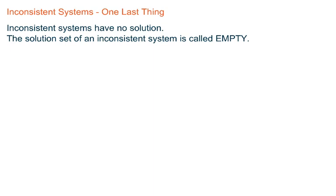Rather than re-recording that video, we're just going to have a brief add-on here. So, an inconsistent system is the type of system that has no solutions.